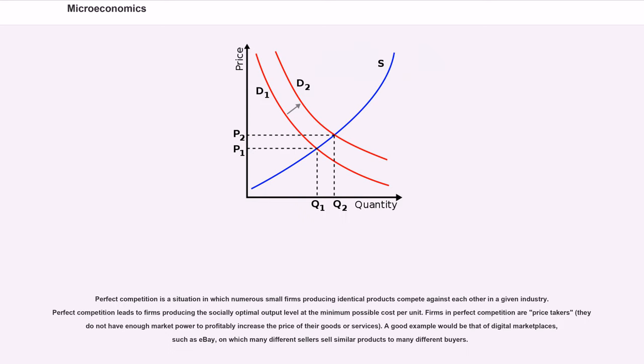Perfect competition is a situation in which numerous small firms producing identical products compete against each other in a given industry. Perfect competition leads to firms producing the socially optimal output level at the minimum possible cost per unit. Firms in perfect competition are price takers; they do not have enough market power to profitably increase the price of their goods or services. A good example would be that of digital marketplaces, such as eBay, on which many different sellers sell similar products to many different buyers.